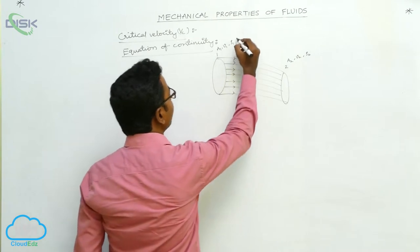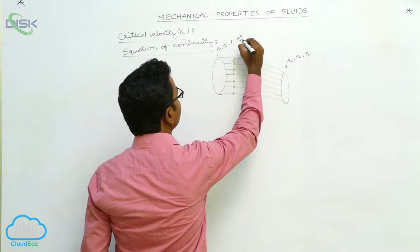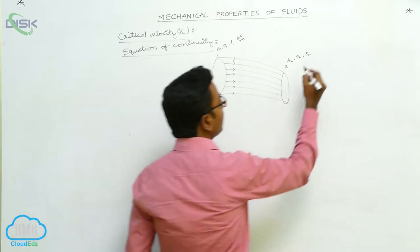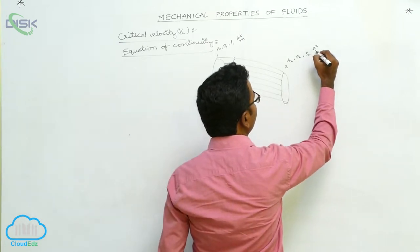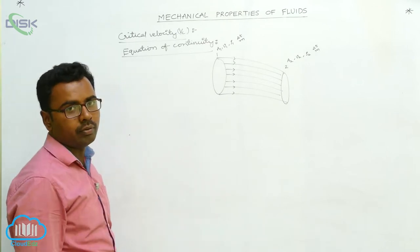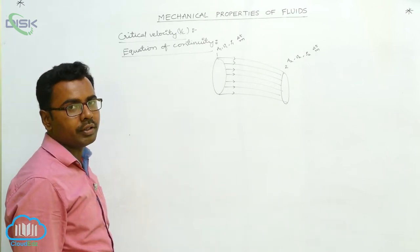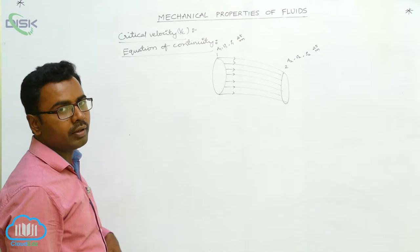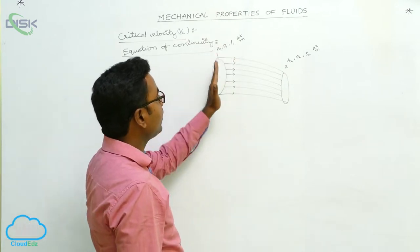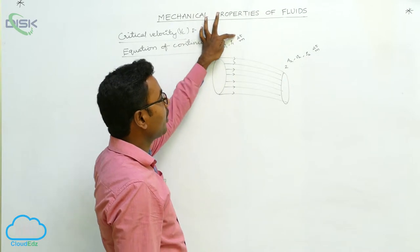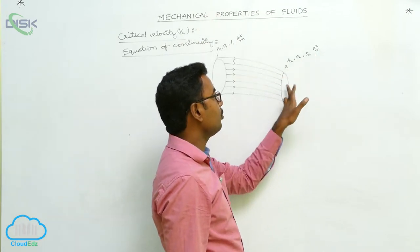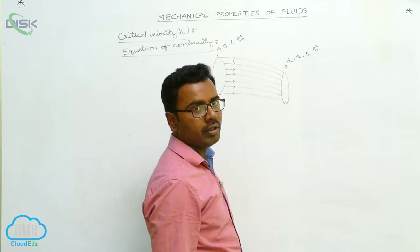Suppose in a time interval delta t, the mass of fluid that enters at cross-section 1 is M. In the same time interval delta t, the same mass of fluid leaves at cross-section 2. This is the law of conservation of mass — the same amount of mass that enters the tube of flow in a particular time will leave it in the same time interval delta t.